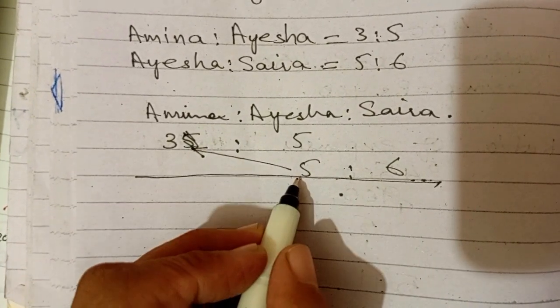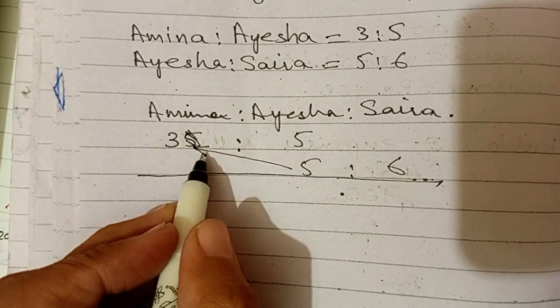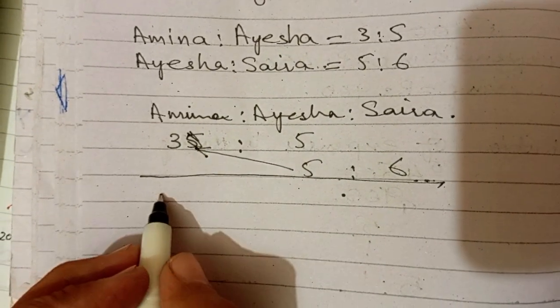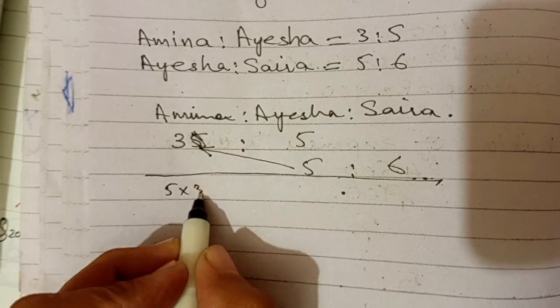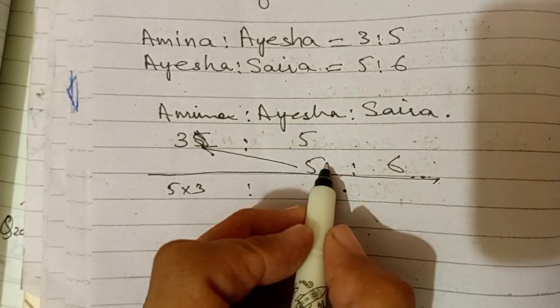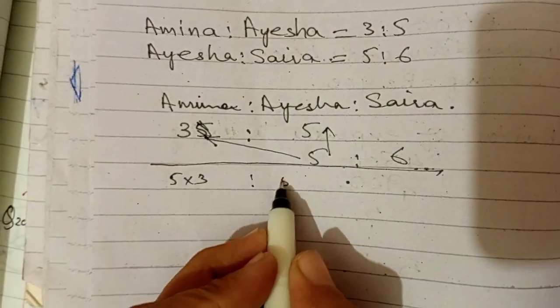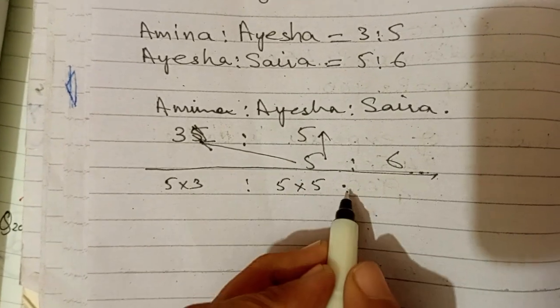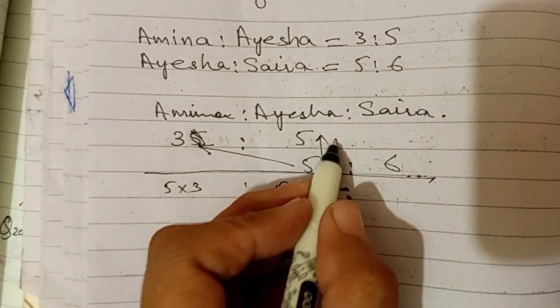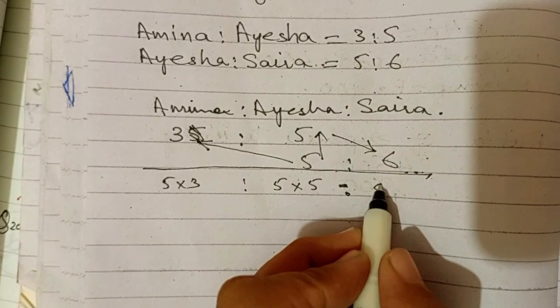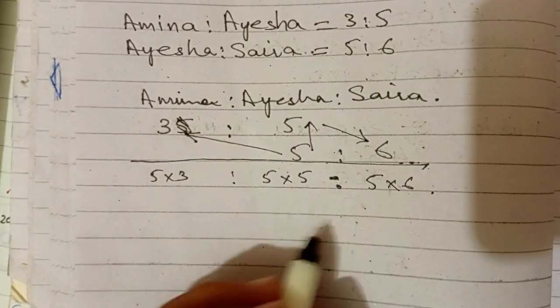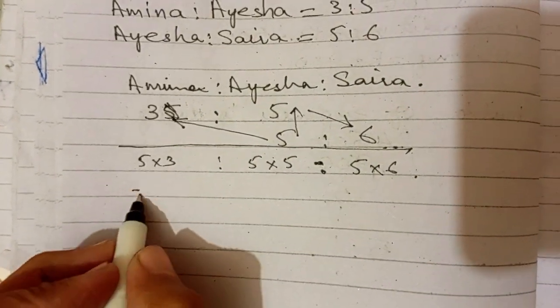Arrow یہاں جائے گا arrow یہاں نہیں جائے گا یہاں سے یہاں arrow جائے گا تو 5 into 3 اس کو ہم یوں بھی لکھ سکتے ہیں 5 into 3. ٹھیک ہے ایسی طرح یہ ہے تو 5 into 5. پہلے یہ لکھوائے جاتا تھا اب teachers نہیں لکھواتے ہیں پھر یہاں 5 ratio 5 into 6 اب ہم اس کو multiple کریں گے یعنی یہ کیا آئے گا.